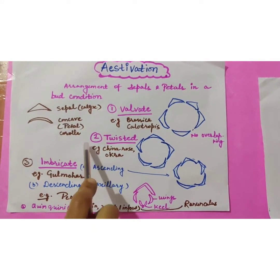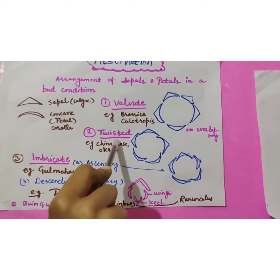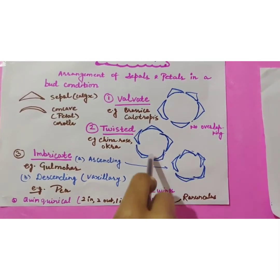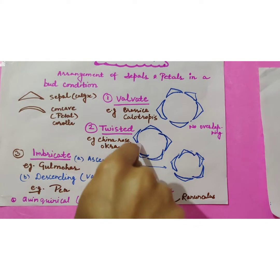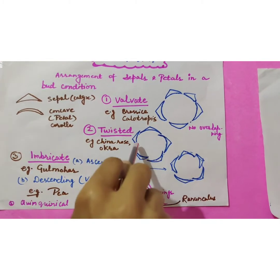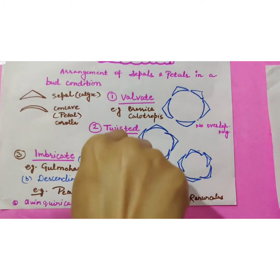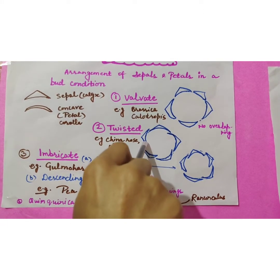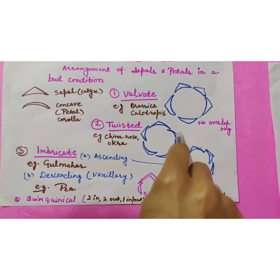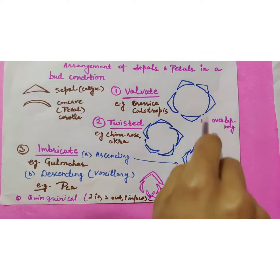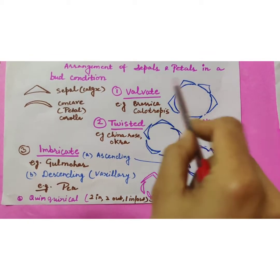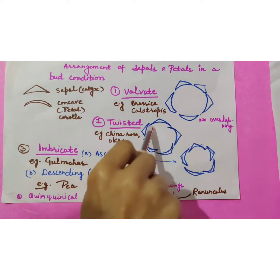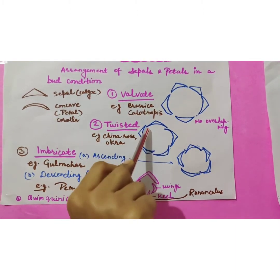Second type of aestivation is twisted aestivation. Here sepals they are arranged in such manner, in orderly manner that their one margin is free but another margin that is overlapped by next sepal. So overlapping is happening in all sepals but in orderly manner. One side up, one side down, one side free, one side overlapped by another sepal.